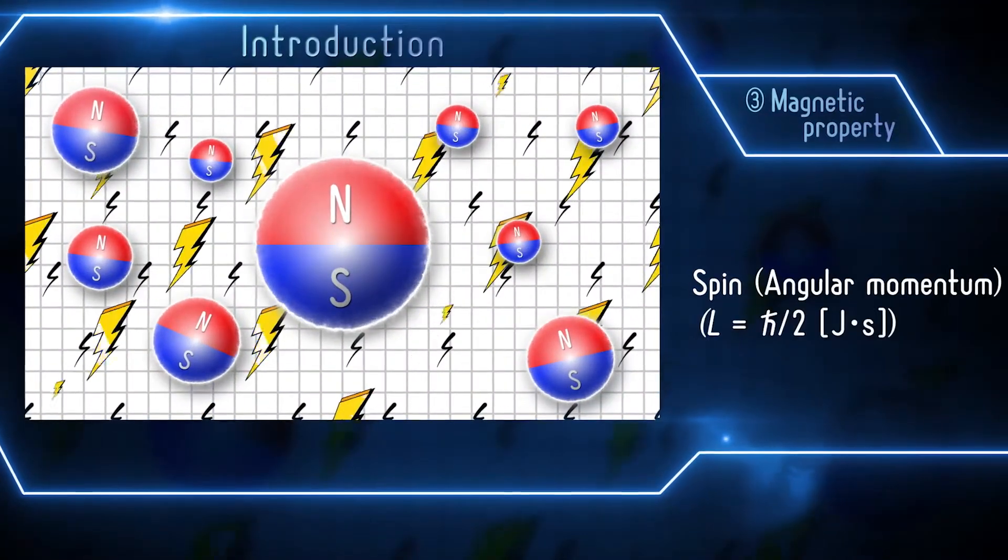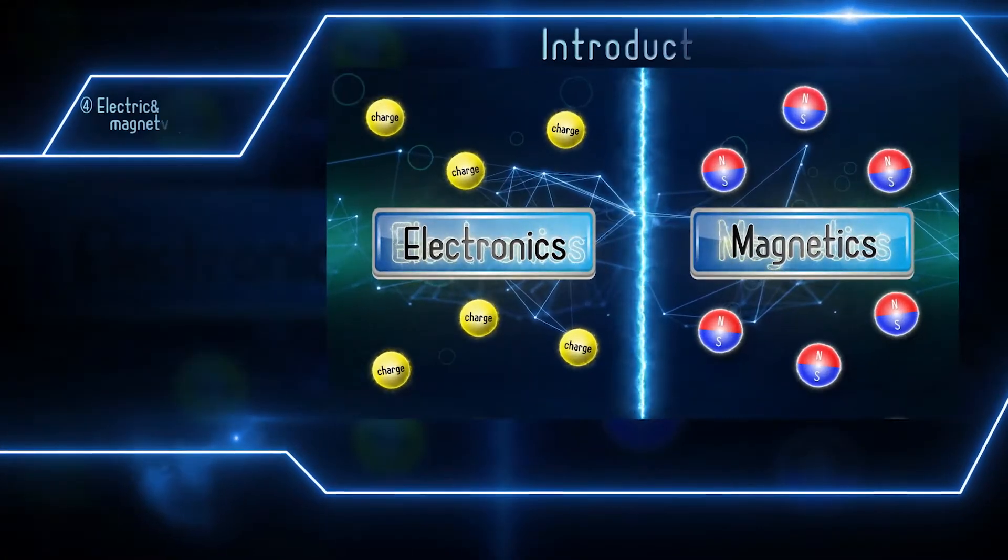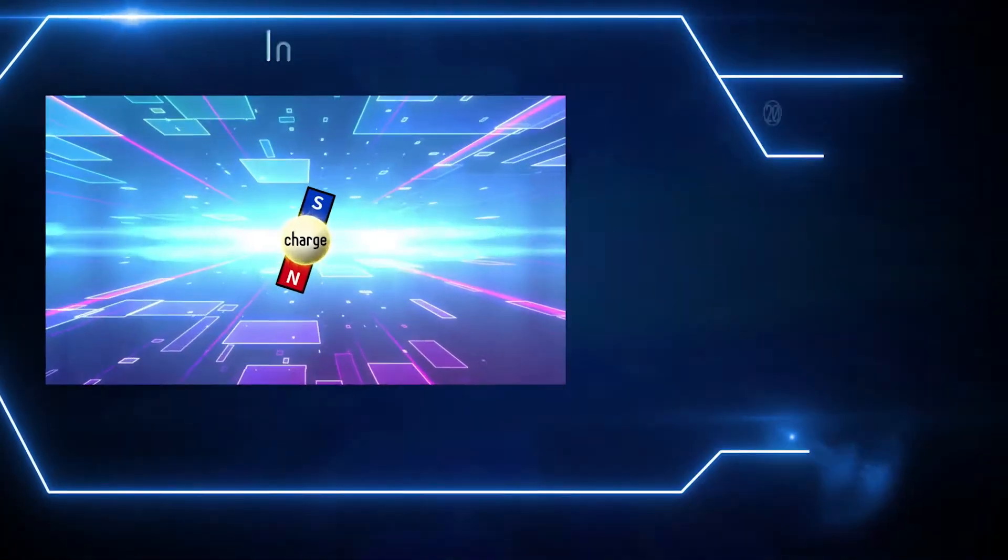but the electron also has a spin, which is a fundamental unit of magnetism. So far, these two properties have been utilized separately. Spintronics utilizes these two properties simultaneously.